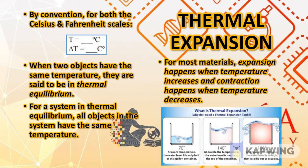Take note of the difference between temperature and temperature difference. By convention, for both Celsius and Fahrenheit scales, we differentiate temperature from temperature difference in how we write the units. For temperature, we write the unit as degree Celsius or degree Fahrenheit. For temperature difference or temperature change, we write the unit as Celsius degrees. This is by convention and we will be very strict with this.